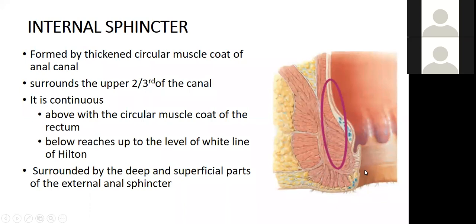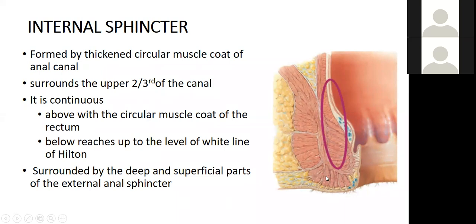The lower border of the internal sphincter is at Hilton's white line, not at the anal orifice, because that line corresponds to the intersphincteric groove. The internal sphincter is continuous above with the circular muscle coat of the rectum, and below it reaches to Hilton's line. It is surrounded by the superficial and deep external anal sphincter. The lower border is palpable at the intersphincteric groove, below which the subcutaneous external sphincter fibers are present.